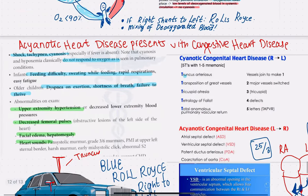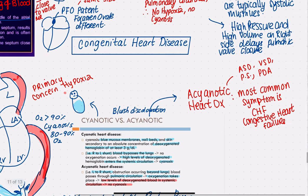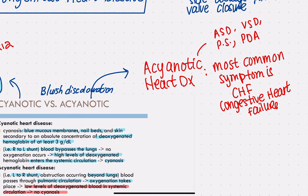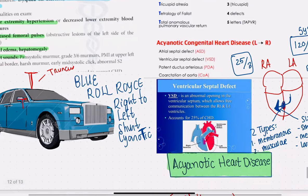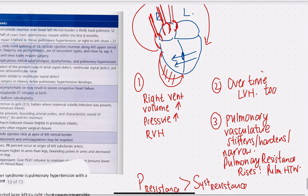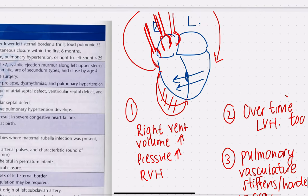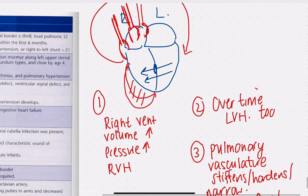The important thing to remember is that an acyanotic heart disease like ASD, VSD, pulmonary stenosis, and PDA — the most common symptom in a baby is congestive heart failure. Over time, more and more blood is pumped from the left chamber to the right chamber, causing the right ventricle to get volume and pressure overload. As more volume enters the right ventricle than it can cope with, the pressure and volume overload leads to right ventricular hypertrophy, causing congestion in the right side of the heart.